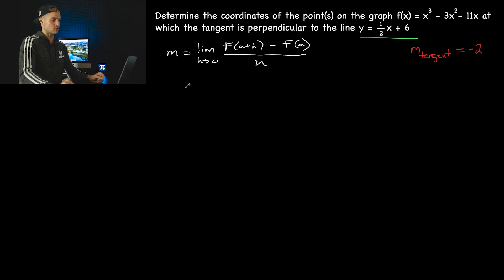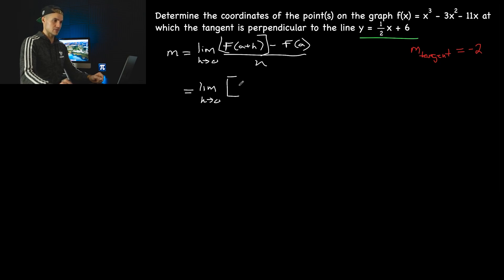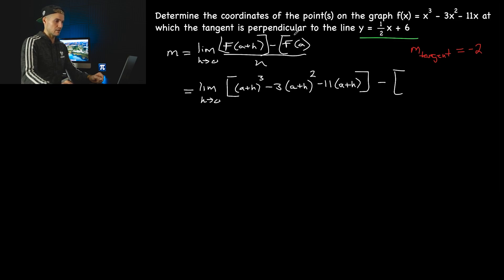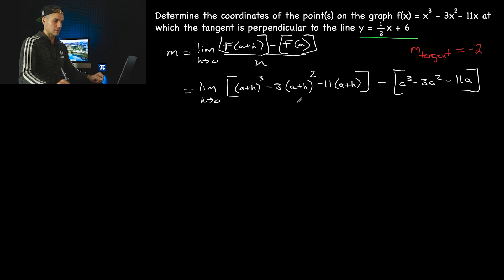Let's get that general expression first. We'll have the limit as h approaches zero, plugging a plus h into the function in square brackets. The algebra in this one is going to be pretty hectic because we have a cubic function — all of this will have to get expanded. That gives us a plus h cubed minus three a squared minus eleven times a plus h, minus the bracket a cubed minus three a squared minus eleven a, all over h.